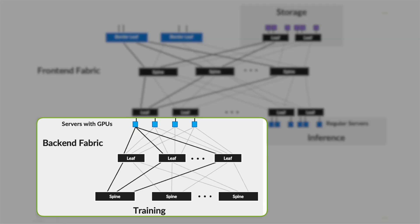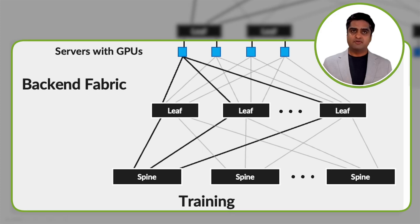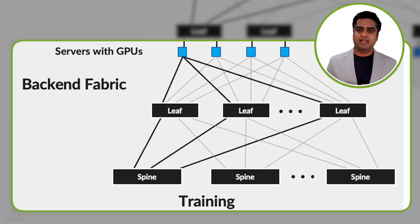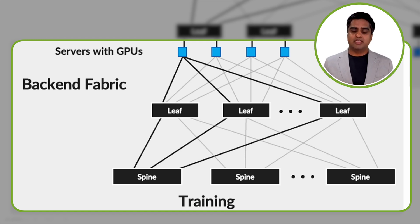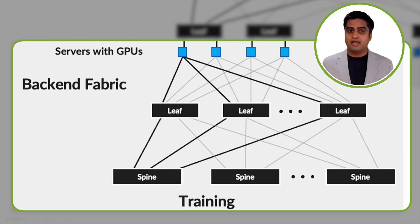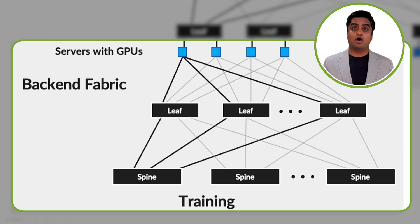The second part is the back-end Fabric — this is where the heavy lifting of ML happens. This is where you have your servers with GPUs: powerful servers equipped with graphics processing units specifically designed for the parallel processing needs of ML training and inference. We also have infrastructure dedicated to training ML models, which could include specialized hardware and software for distributed training, data preprocessing, or model optimization.